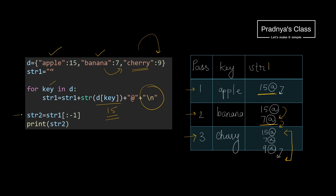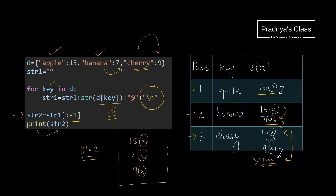The loop is over. Now we are removing the last character of the string. The last character is the newline character, so this will get removed. When we print it, we will get '15@', then '7@', then '9@', because the last newline character got removed using the slicing concept.